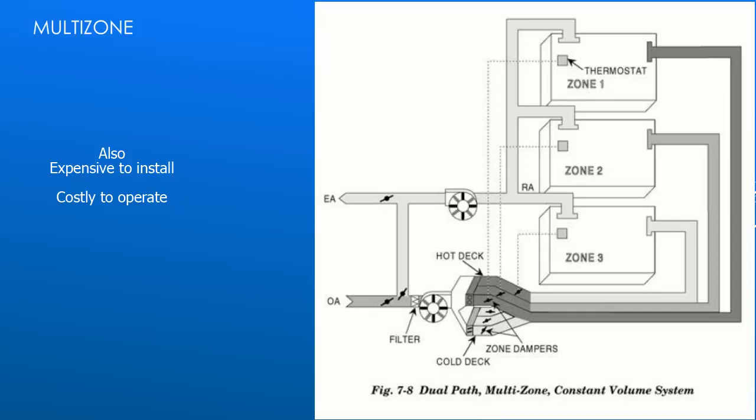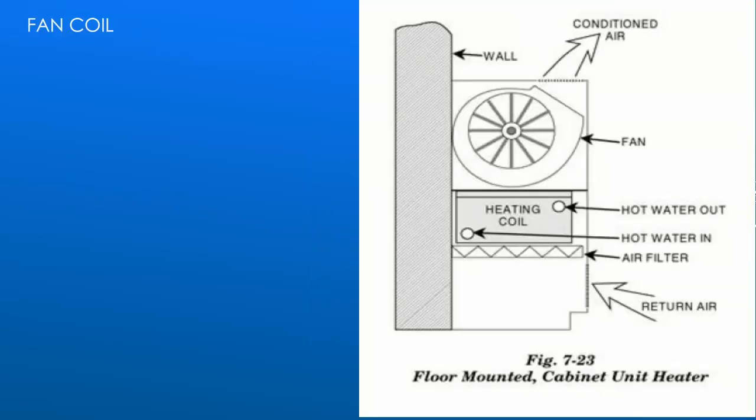Like the dual duct system, this is an expensive system to install and not efficient to operate. This is no longer a popular system type. Fan coil units are placed against an inside or an outside wall in the room they are to serve. Fan coils are just that — a heating coil and a fan in a cabinet. With the fan on, air is pulled from near the floor, filtered and passed across the heating coil before being discharged into the space. The thermostat or sensor in the room controls the amount of hot water allowed to pass through the heating coil as well as the fan operation. Simple and convenient, fan coils are a popular choice.